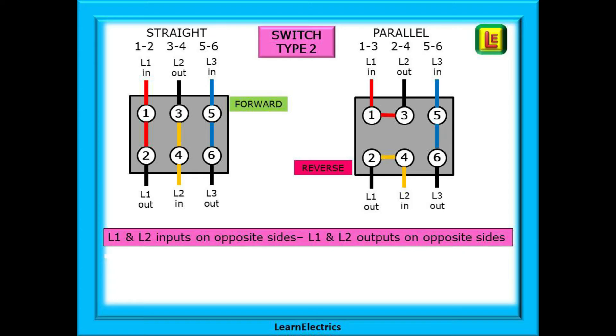It is very important that we do not wire the switch so that any two live inputs can be connected together. With this example switch, L1 in and L3 in can both go to the same side of the switch, but L2 in must go to the opposite side of the switch. Look at the drawing and you can see why this is, and in the same way two outputs are on one side of the switch and one output on the other side.